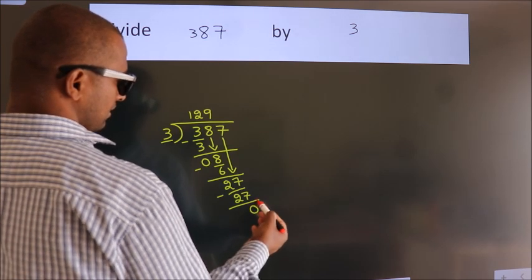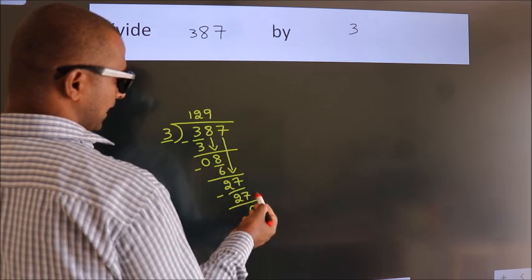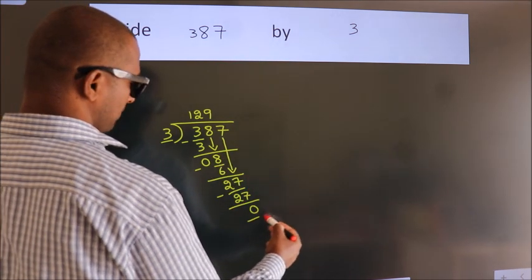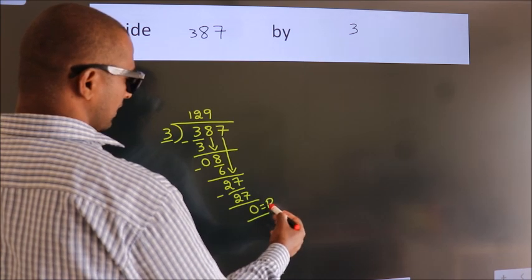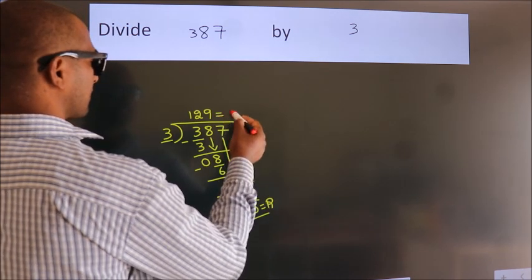After this, no more numbers to bring it down. So, we stop here. This is our remainder. This is our quotient.